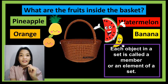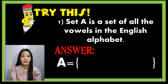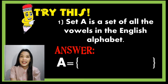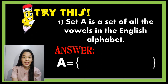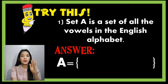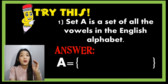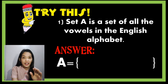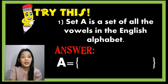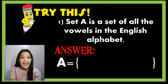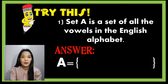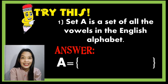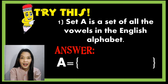Let's have other examples. In number one, Set A is a set of all the vowels in the English alphabet. We're not just going to identify the members or elements of the set, but we're also going to study how we can write our answers. Since we are looking for Set A, we're going to use capital letter A, the equal sign, and the braces.